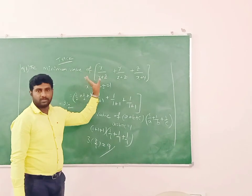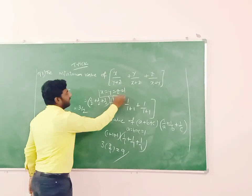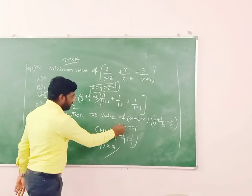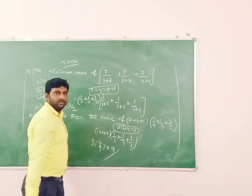These two questions ask for the minimum value of the function. This is one of the tricks. The trick is x equal to y equal to z equal to 1. This is the method.